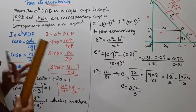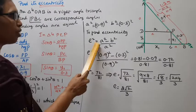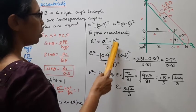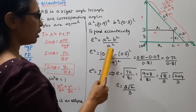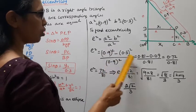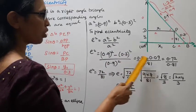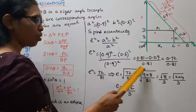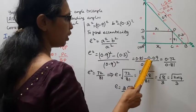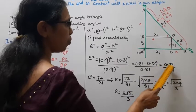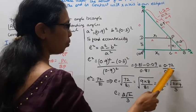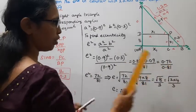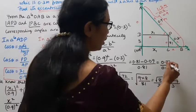To find eccentricity, e square equals a square minus b square by a square. e square equals 0.9 whole square minus 0.3 whole square by 0.9 whole square. That's 0.81 minus 0.09, which is 0.72 by 0.81.